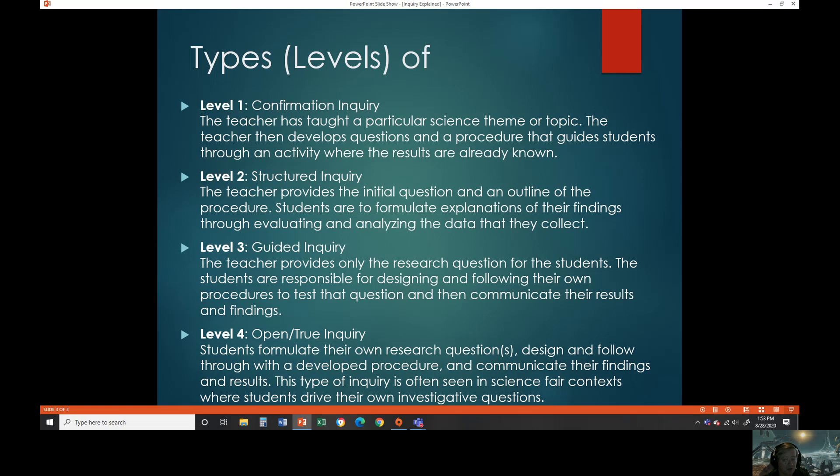Now, level three is guided inquiry. This is where the teacher provides just the research question for the students. The students then have to come up with their own experiment. They have to follow their own procedures and they need to test that question out. So you see how at this point, in level two, the instructor provided some of the experiment, but in level three, the teacher only provides the question. Now the students need to come up with the experiment, they need to figure out how to design it, they need to look at what data they need to collect, and then they also need to think about how they're going to communicate their results.